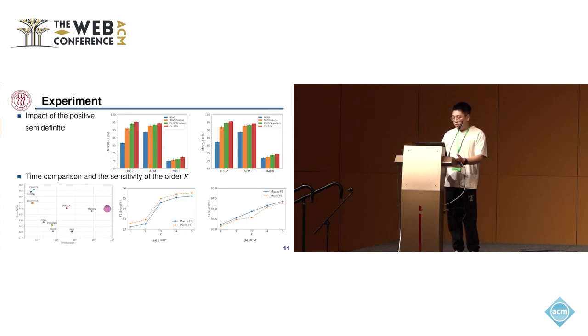Then we investigated the impact of the positive semidefiniteness constraint. We compared the PSHGN and its variance without this constraint. From the results, PSHGN outperforms its variance, especially with smaller standard errors over multiple repeated runs.